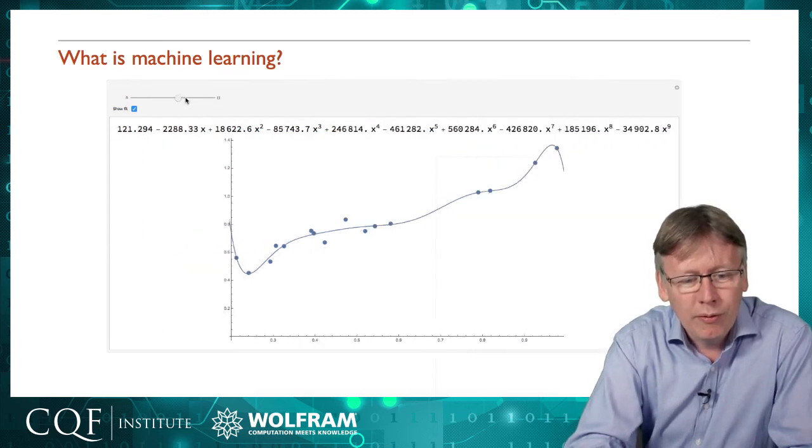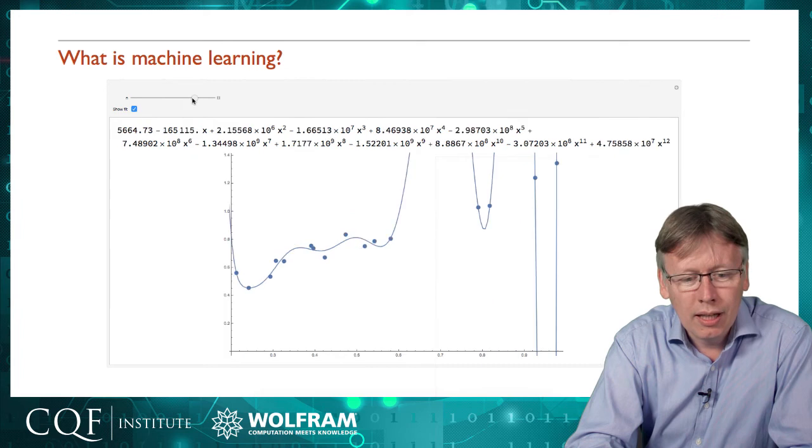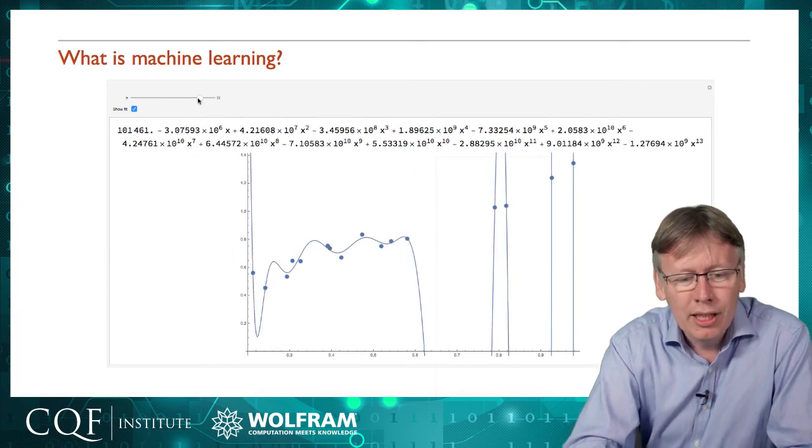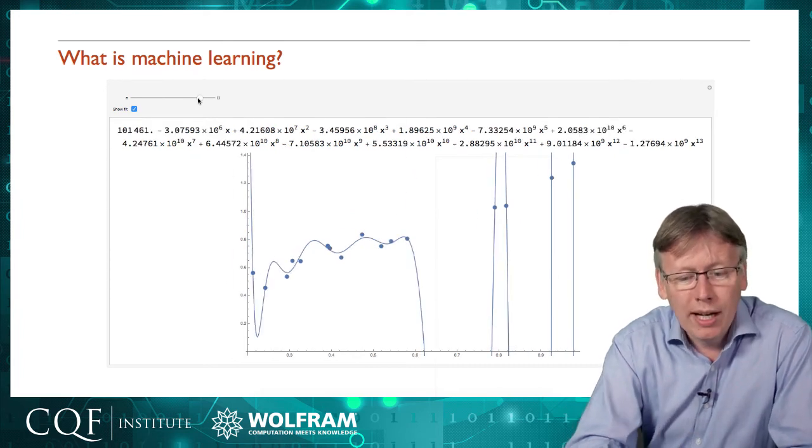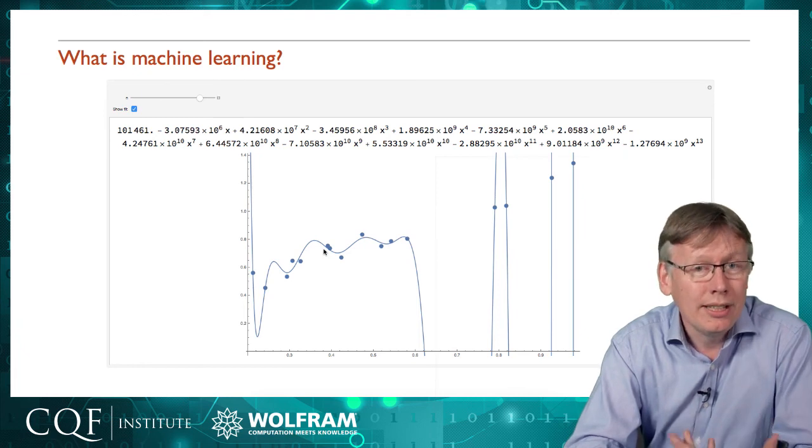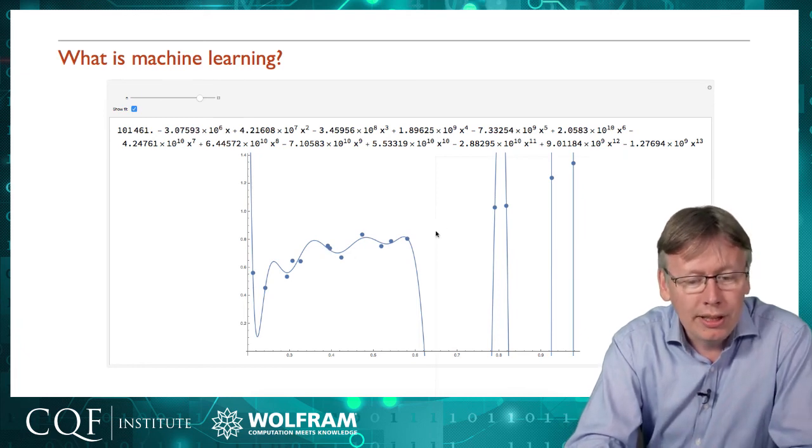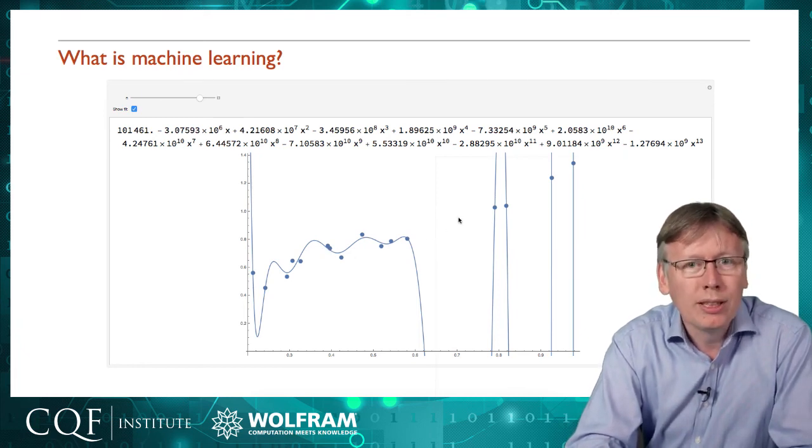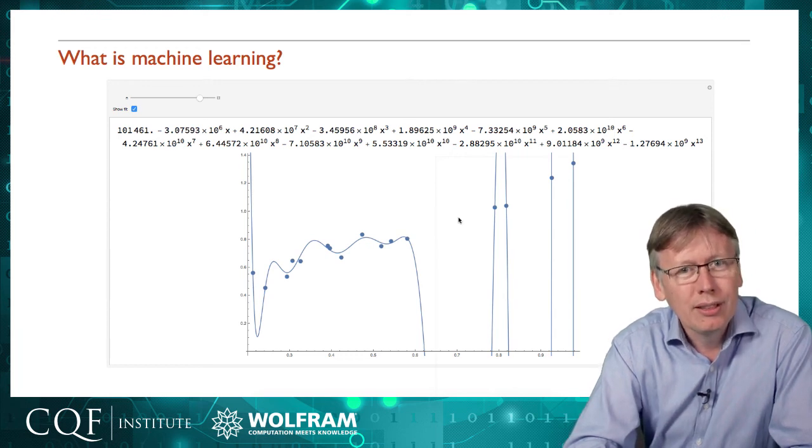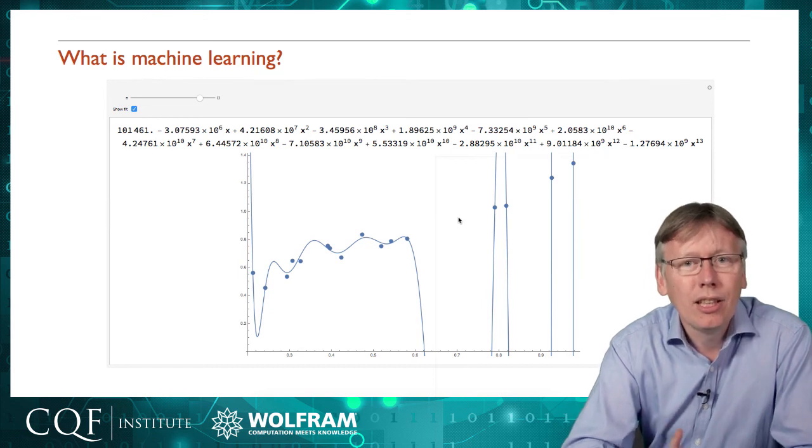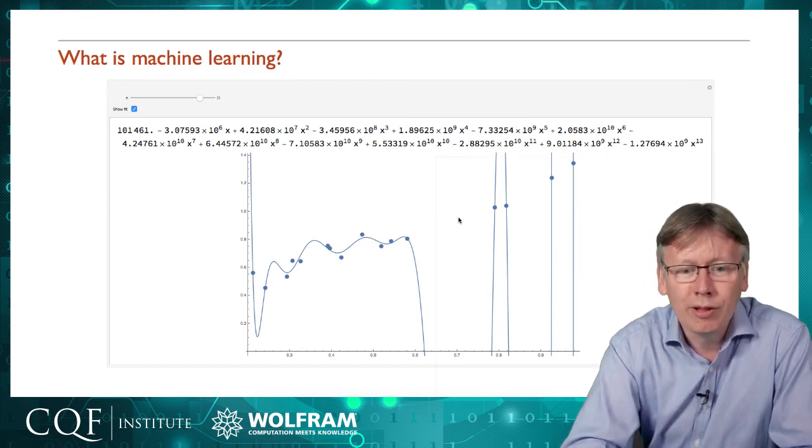But the other problem with fitting is that if you start adding too many parameters, you get what's called overfitting, where the fit gets better in the sense that it's closer to the data. But in terms of trying to predict what happens, it gets worse, because what you're really fitting is the noise, the errors in the data, rather than fitting the underlying essence of whatever the data is describing.